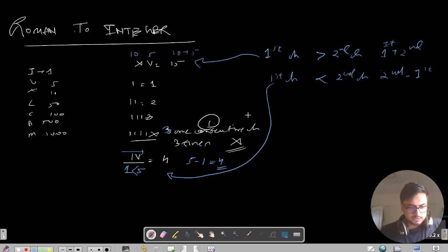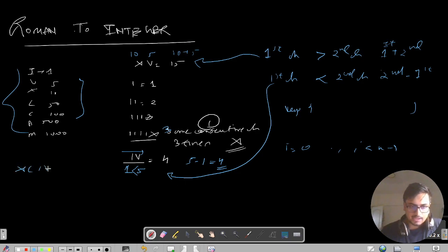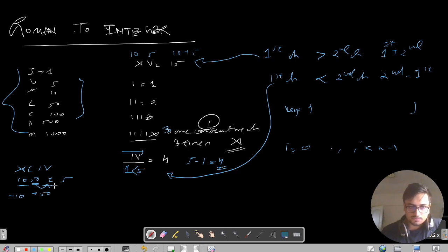Let me give a hint for the pseudocode. Put all the values in a map, then run a for loop from i = 0 to i < n - 1. For example, consider XLIV: X is 10, L is 50, I is 1, V is 5. X (10) is lesser than the next value (50), so take minus 10. L (50) is greater than the next value, so take plus 50. I (1) is lesser than the next value V (5), so take minus 1. For the last character V, there is nothing to compare, so take plus 5.